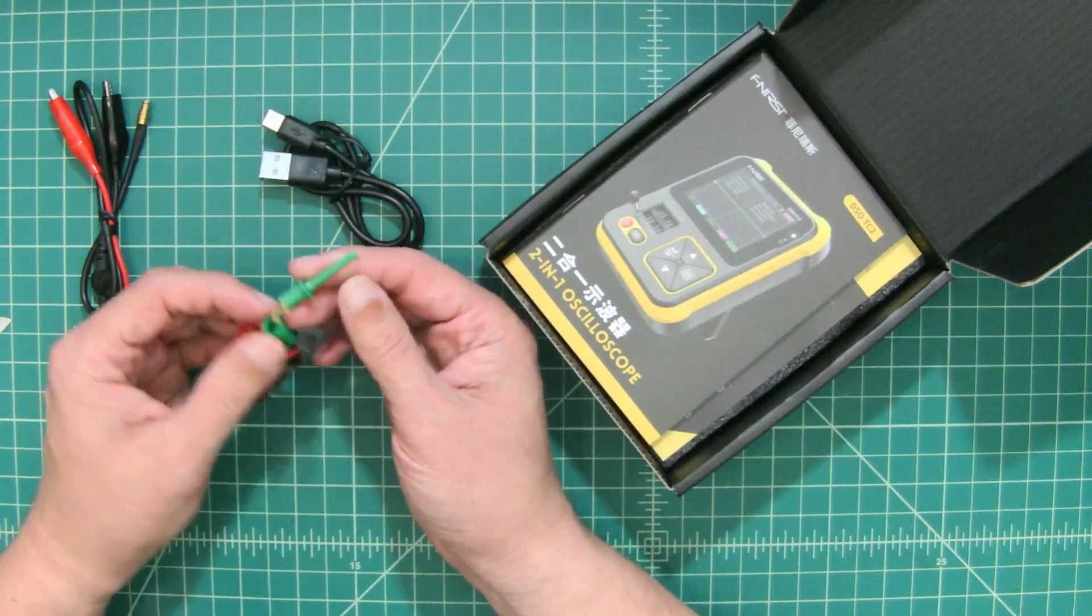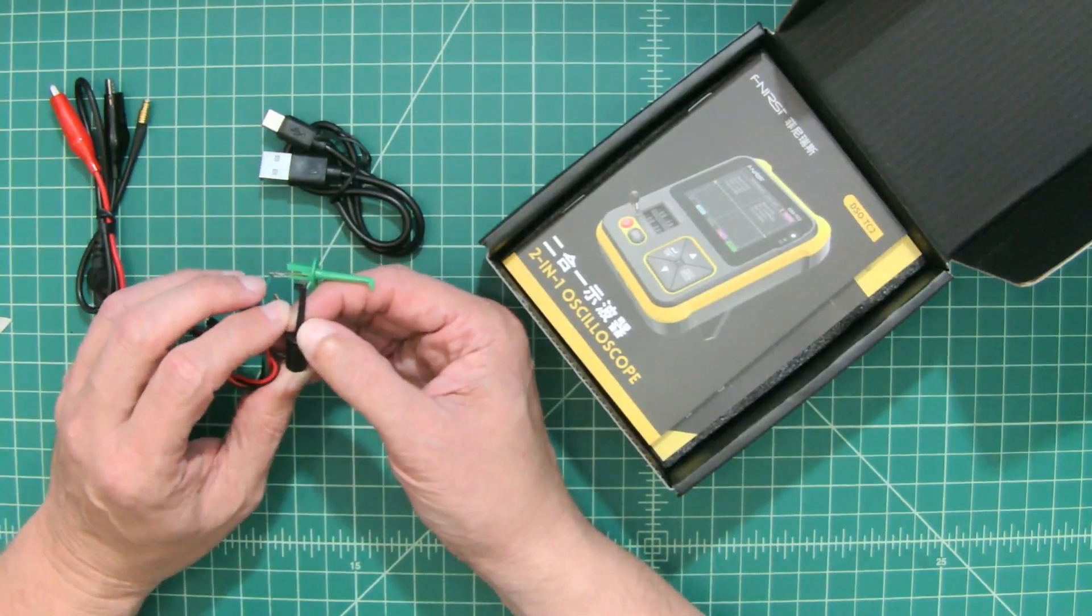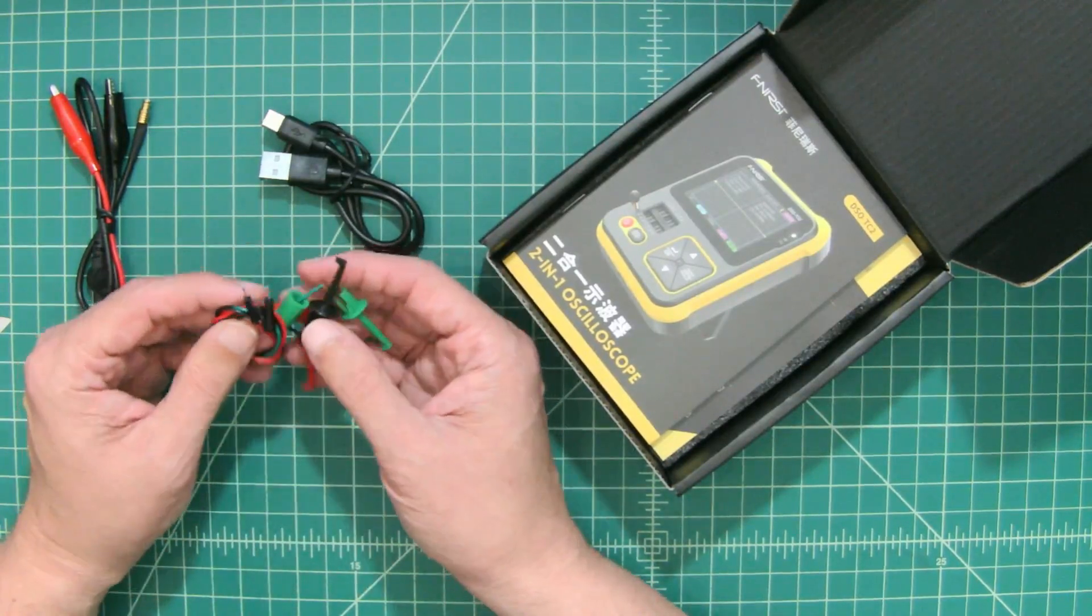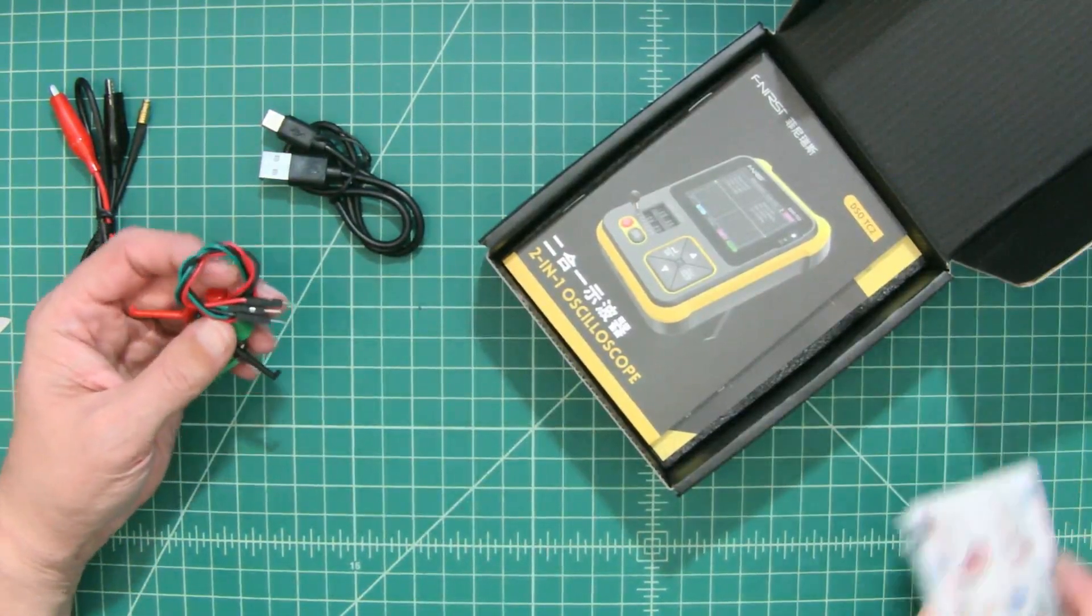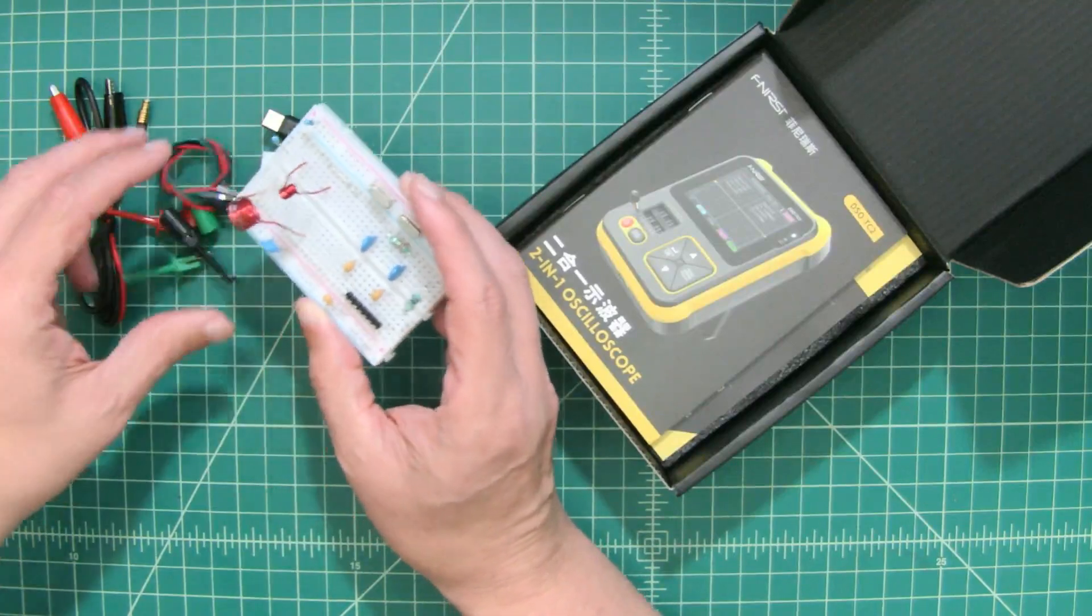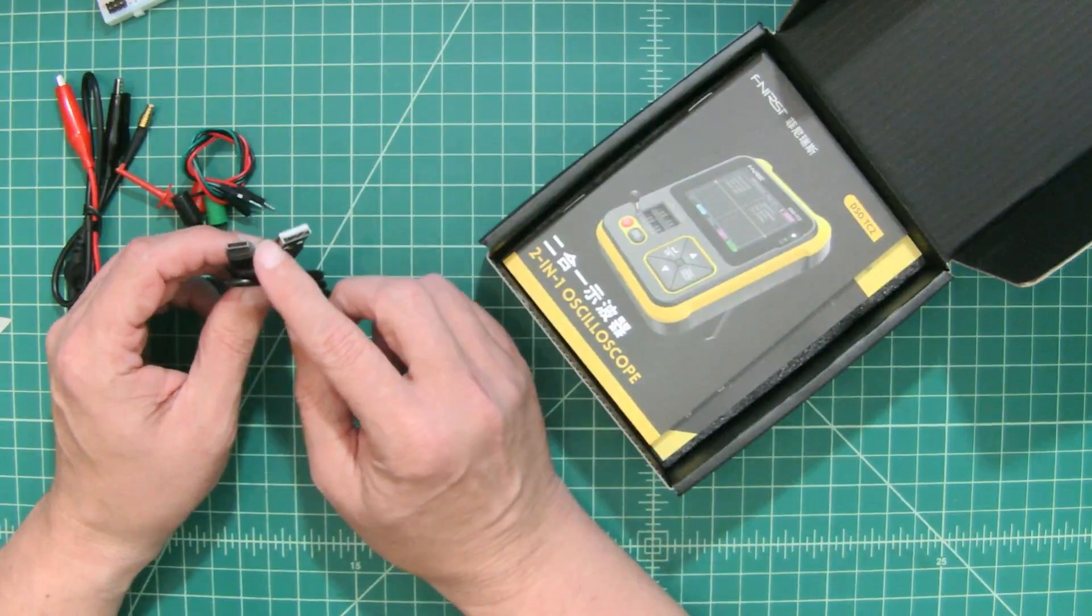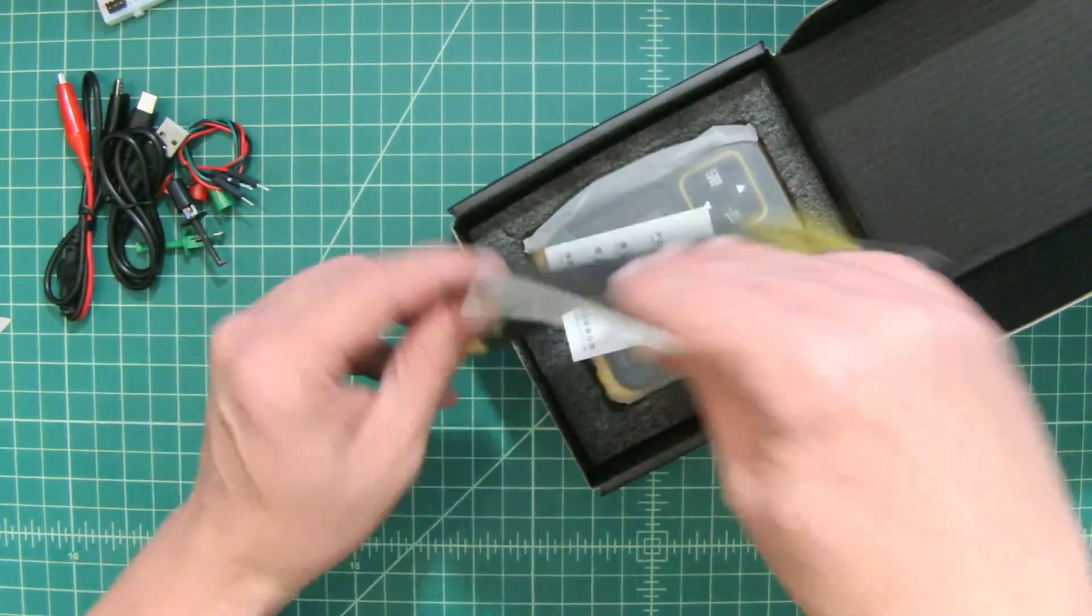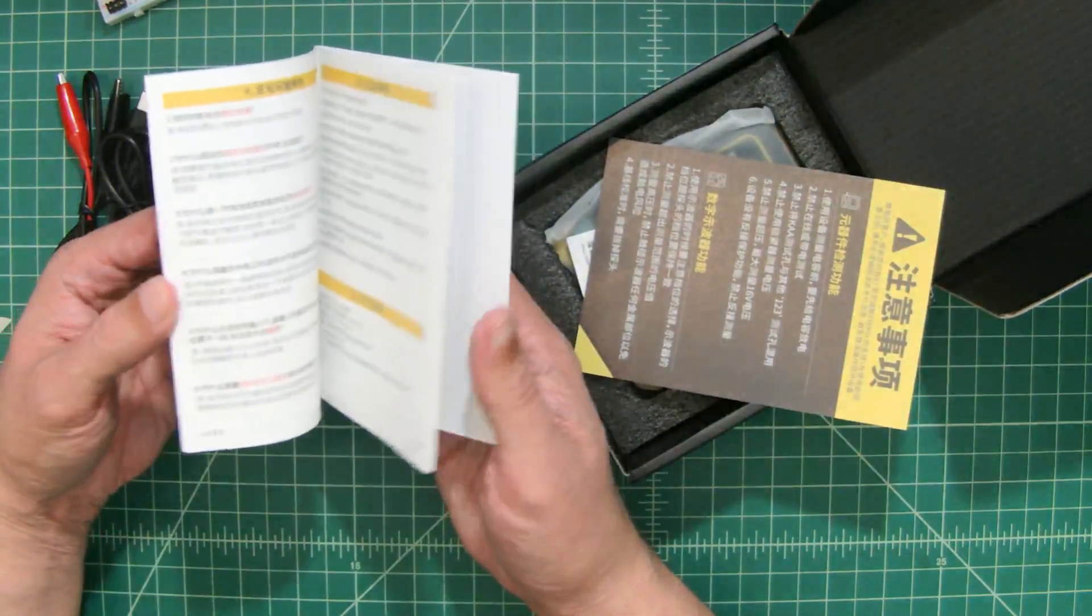It looks like we have some alligator clips to MCX connector, which is cool. Then we have some of these little hook probes that you can use. They have DuPont pins here, so what's handy is that you can plug them in line with a circuit on a breadboard and then connect to your oscilloscope. It comes with a USB-C cable for charging the device.